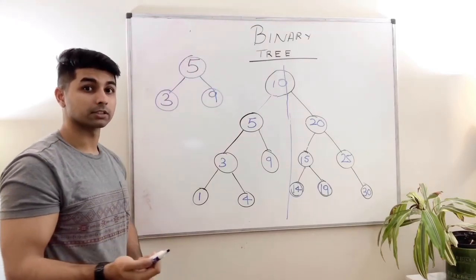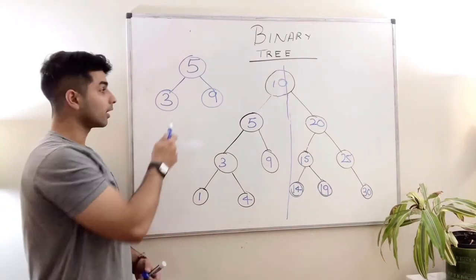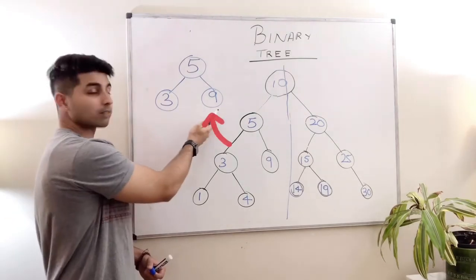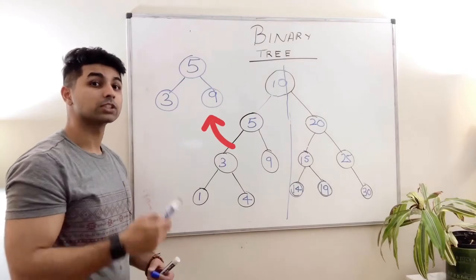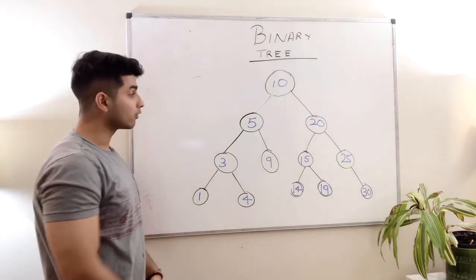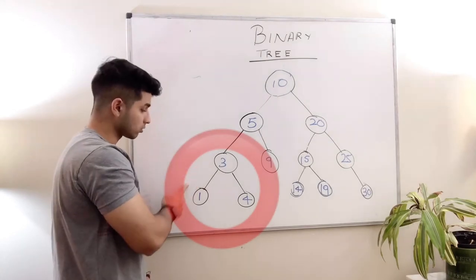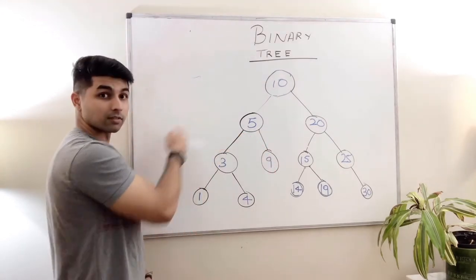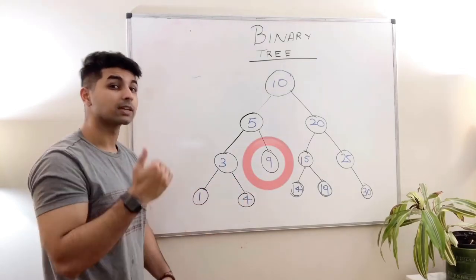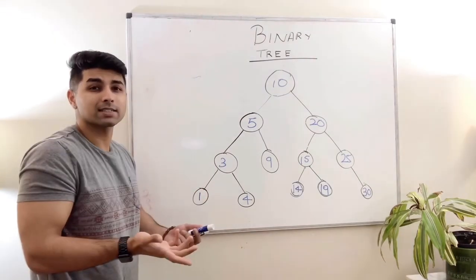Let me show you with a smaller example. This is also a binary search tree. Looking at 5, the root node, the left side has 3 which is lesser than 5, and the right side has 9 which is greater than 5. Any node you look at in this tree will have that property — all values to the left are lesser, all values to the right are greater. Every single node in a binary search tree follows this property.